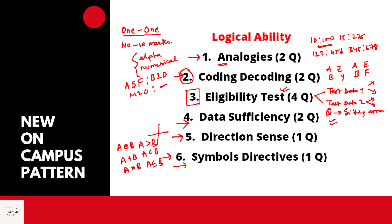Don't worry about time because analogies, coding decoding, directions, and five questions you'd be able to do in three to four minutes, saving time to read the eligibility test criteria. Look at the data of the given person very carefully. First see that all required data is given or not before drawing any conclusion. If the entire data is not there, please clearly mark 'data insufficient.' If entire data is there, then check whether the person is eligible, not eligible, or conditionally eligible. Make use of the entire 15 minutes — don't hurry. Do it calmly in 15 minutes.